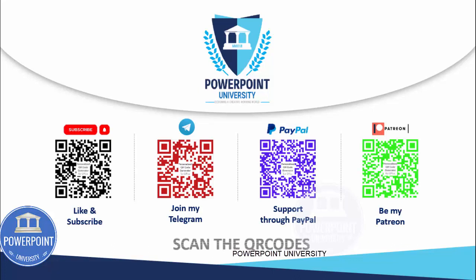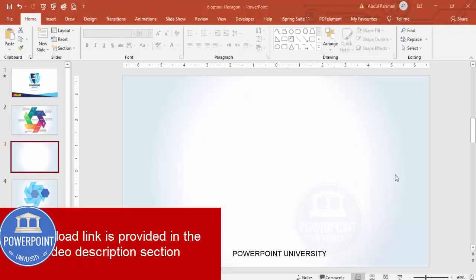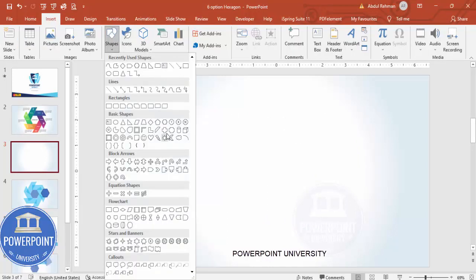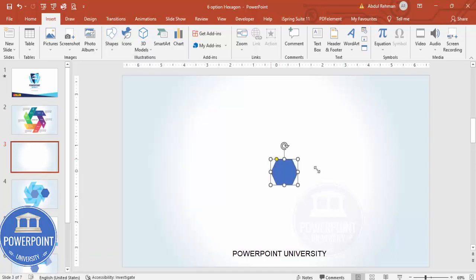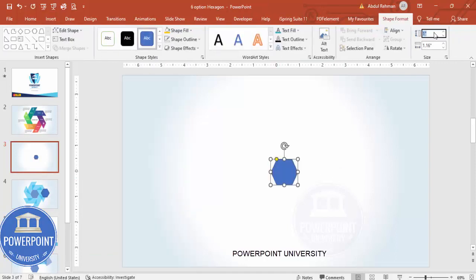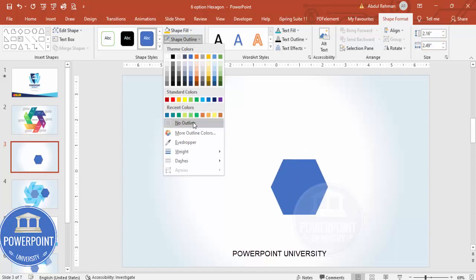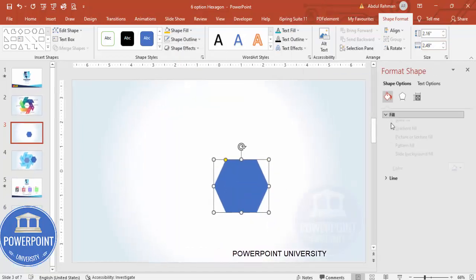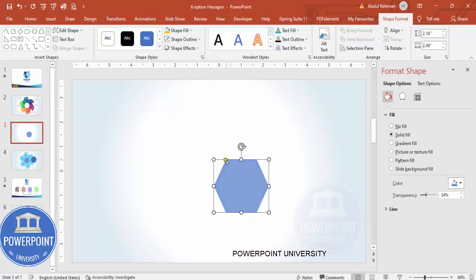Let's start the tutorial. Add a new slide and change the background to any gradient fill. Then go to Insert > Shapes and from the Basic Shapes choose the hexagon. Set the height to 2.16 and the width to 2.49. Make the shape outline no outline, then right-click and go to Format Shape to make it somewhat transparent. Drag the small orange point a little bit inside.